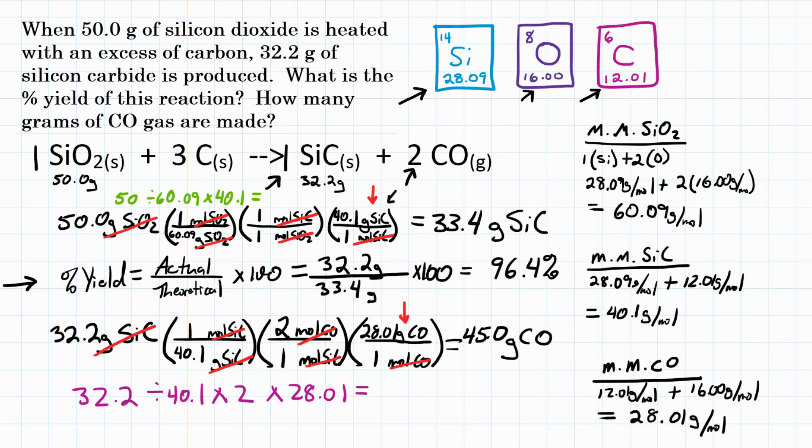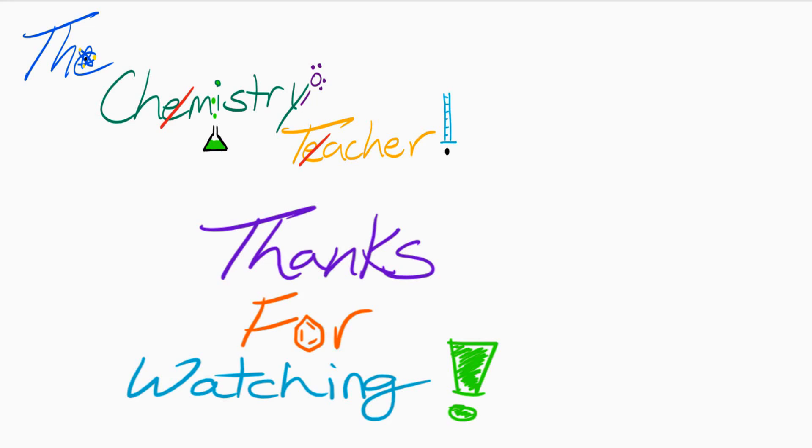So what is the percent yield of this reaction? It is 96.4 percent. And then based off that percent yield, how many grams of CO are made? It's going to be right around 45.0 grams of CO. All right, everyone, if you want to see another example, click in the top right. Please like this video if it helped you in any way. Feel free to look in the doobly-doo below for additional help and resources. Please subscribe and ring the bell to get notified for new videos. And thank you, thank you so much for watching.